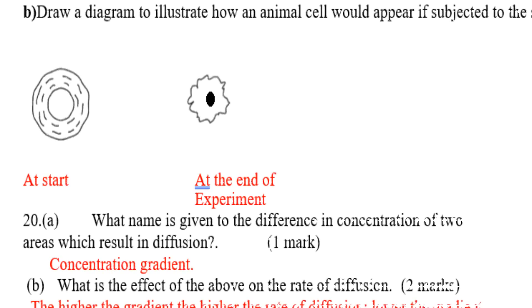Part B: draw a diagram to illustrate how an animal cell would appear if subjected to the same hypertonic solution — at the start and then at the end. It will look like the diagram shown here.